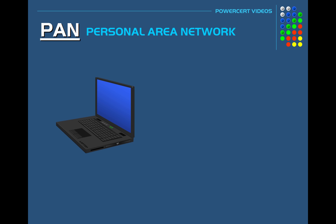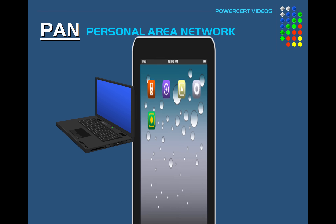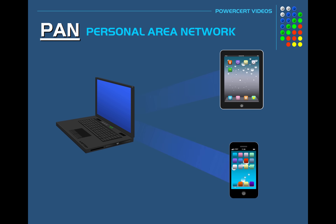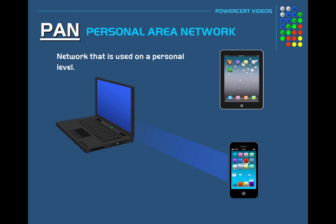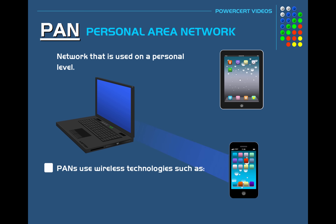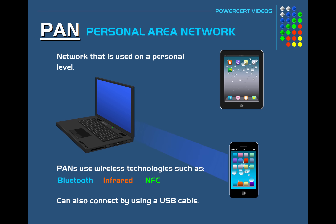Let's first talk about a PAN. PAN stands for Personal Area Network. This is a type of network that is used on a personal level. It's a small network that is used for connecting devices such as smartphones, tablets, and laptops. They connect to each other by using wireless technologies such as Bluetooth, infrared, and near field communication or NFC. But they can also connect by using a wired connection such as a USB cable.